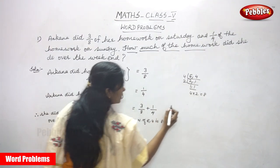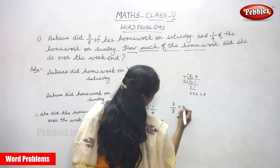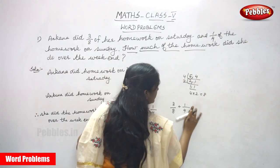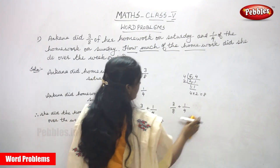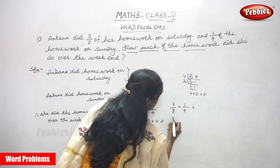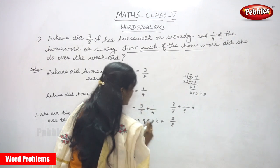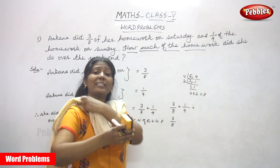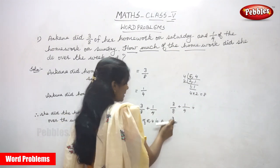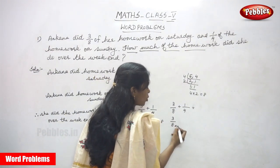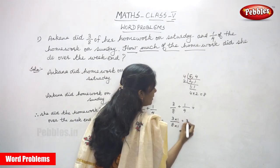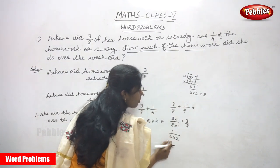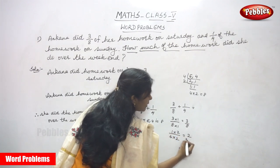So we write three-eighths plus one-fourth. LCM stands for least common multiple — we take the LCM to make the denominators equal. For three-eighths, the LCM is 8, so we multiply by 1 and still get three-eighths. For one-fourth, we multiply numerator and denominator by 2, giving us two-eighths.